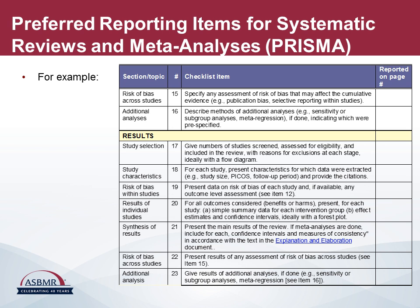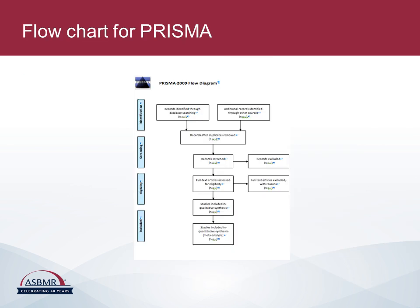Here's an example of the PRISMA checklist itself. On this page you can see some of the details required in the results section, and the format of the checklist for JBMR is the same as for the other checklists. There is also a flow chart which goes through the processes: first, identification of studies; secondly, how these studies were screened; thirdly, the criteria for eligibility of the studies; and finally, the details of studies that were eventually included in the meta-analysis.